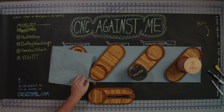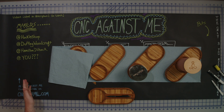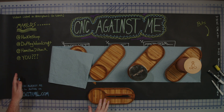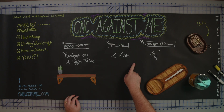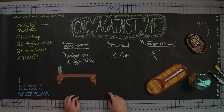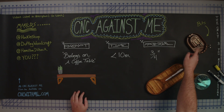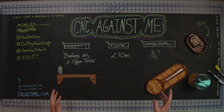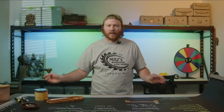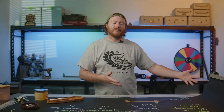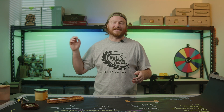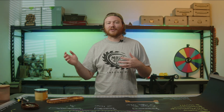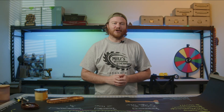Earlier in this video, I mentioned that you could be one of the winners. Right now over on cncwithme.com, there is a brand new challenge available where you have exactly these same prompts — belongs on a coffee table, machine time under ten minutes, and three-quarter-inch material. Any of the cncwithme bits are going to be available, so you can use any of those three to create your project. The winner is then going to be given the next set of prompts, and their project is going to be shown off on the YouTube channel on the very next CNC Against Me challenge, which is going to be the very first Friday of October.